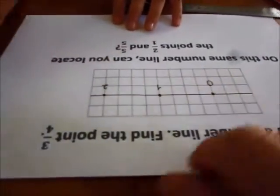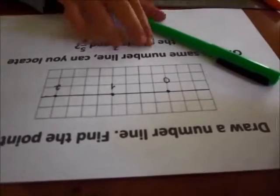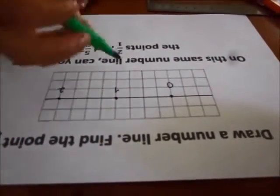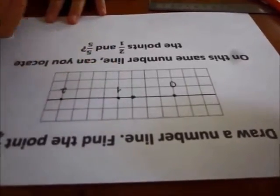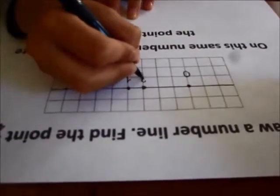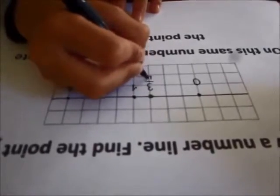Now the problem wants you to find the point three-fourths. Why don't you use this green marker. Show me where the point three-fourths would be. Here. Okay, good. And use the marker to call it three-fourths. Good.